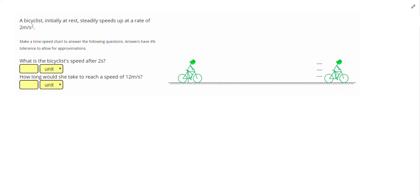In this video, we're going to work on making time speed charts, and in doing so, understand exactly what acceleration means. Our problem says a bicyclist, initially at rest, steadily speeds up at a rate of 2 meters per second squared. So let's go ahead and start by drawing a time speed chart.